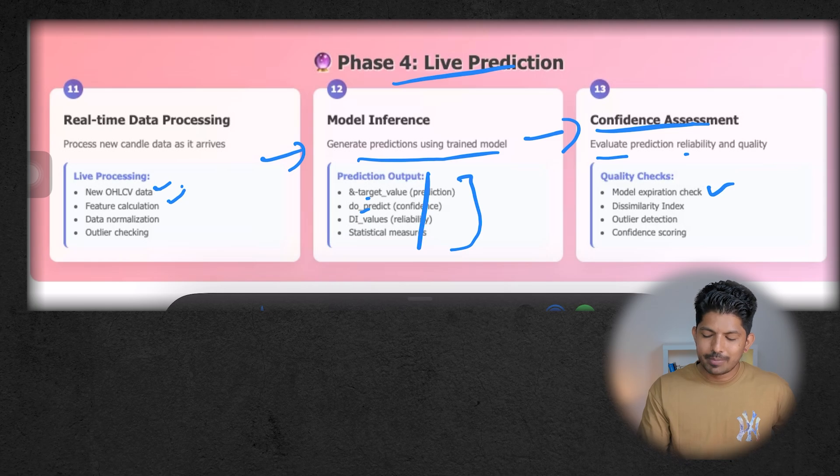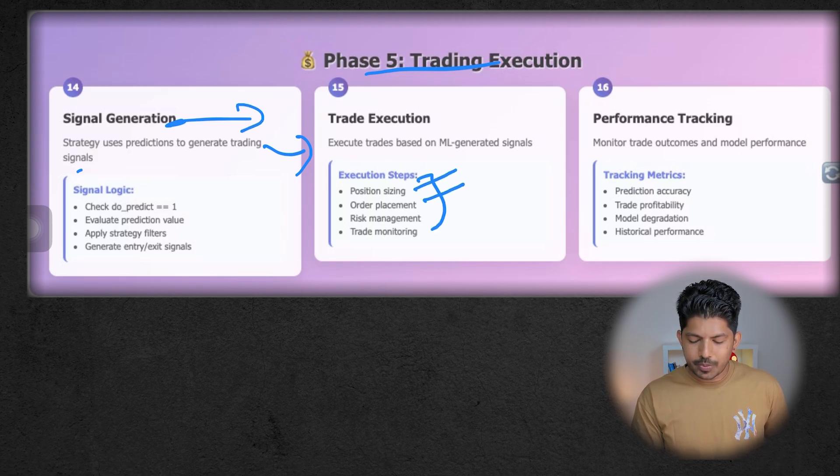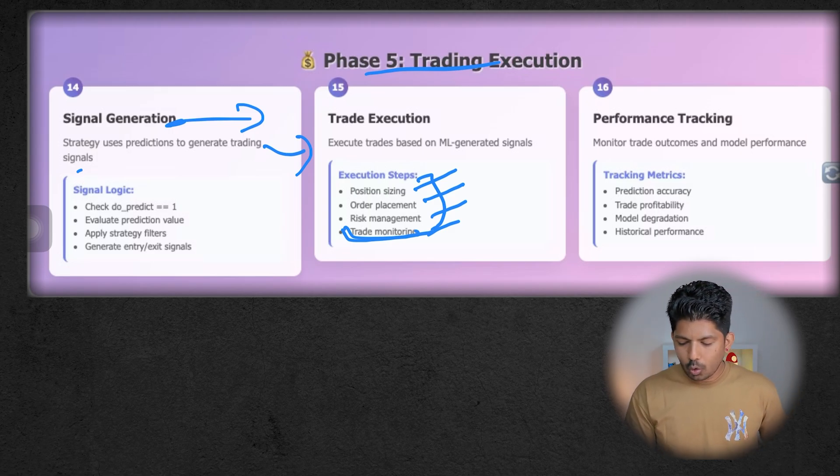The last phase is trading execution, in which signals will be generated. The strategy uses predictions to generate trading signals. Then trades will be executed based on these signals generated. We execute steps like position sizing, order placement, risk management, and trade monitoring. And one more thing: for the trade monitoring part, we have a very robust monitoring infrastructure, which is ELK stack—Elasticsearch, Logstash, and Kibana. I'll be showing you how to set up that also in the upcoming videos.